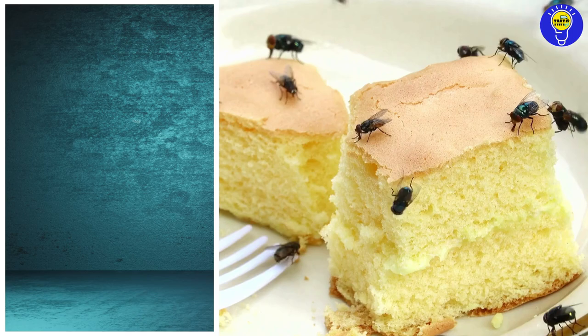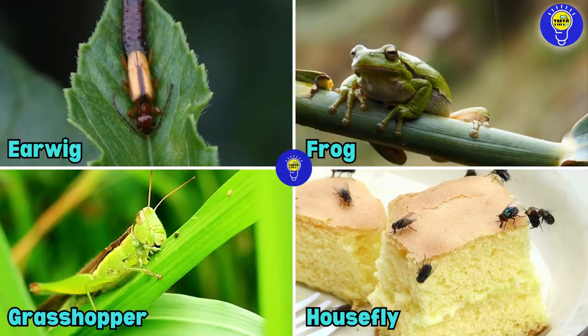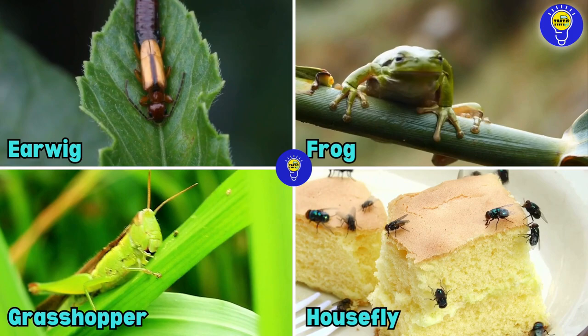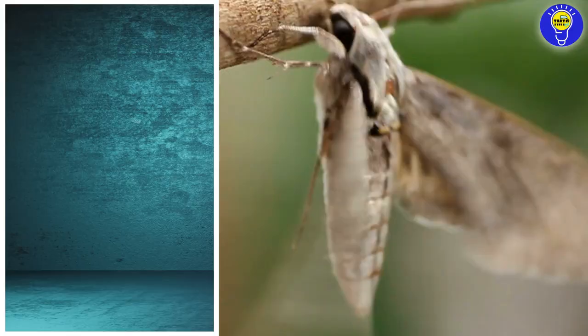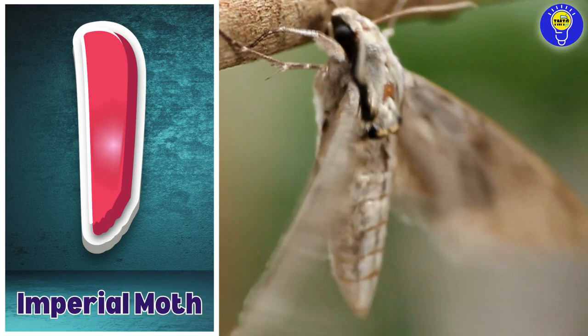H is for housefly. H, h, housefly. I is for imperial moth. I, i, imperial moth.